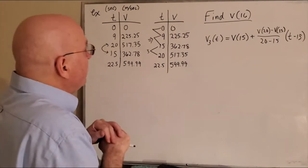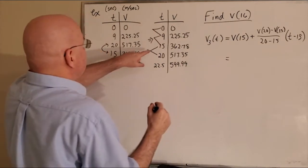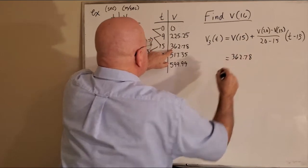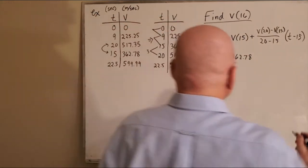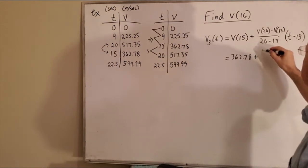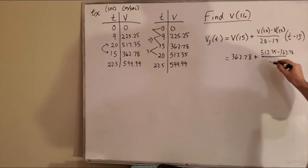Okay, so that is V15, which is 362.78, plus V20, which is 517.35, minus 362.78, over 20 minus 15.